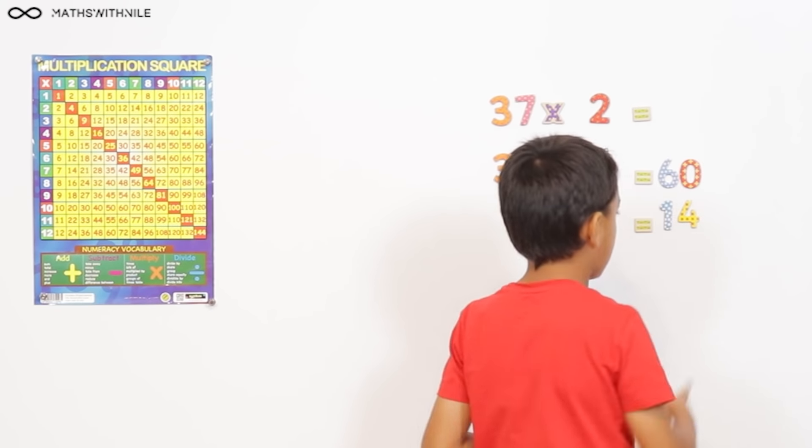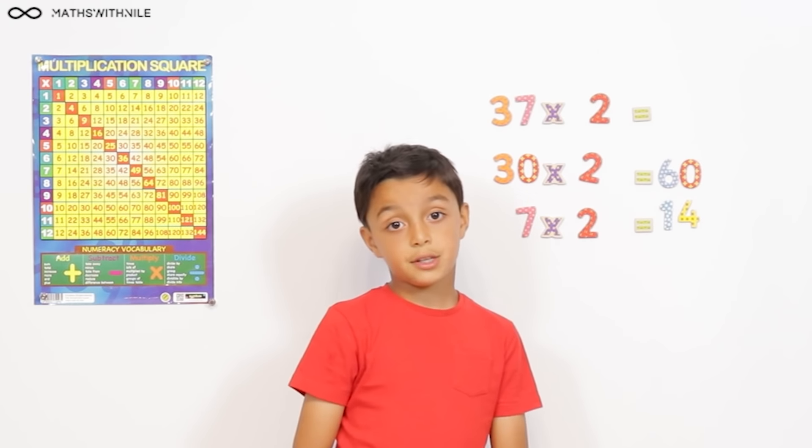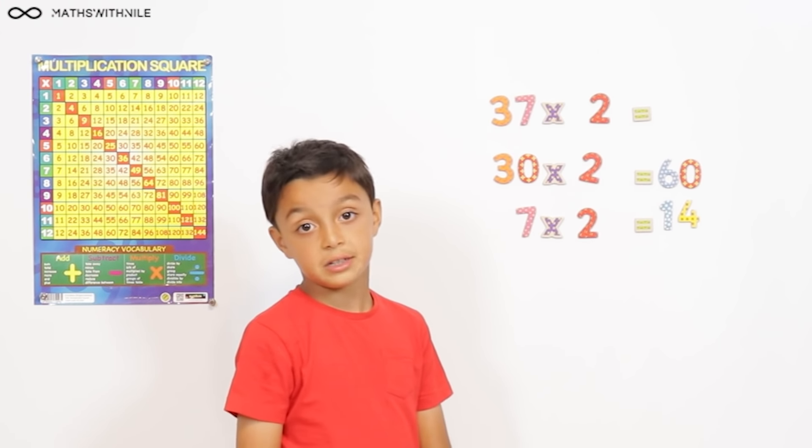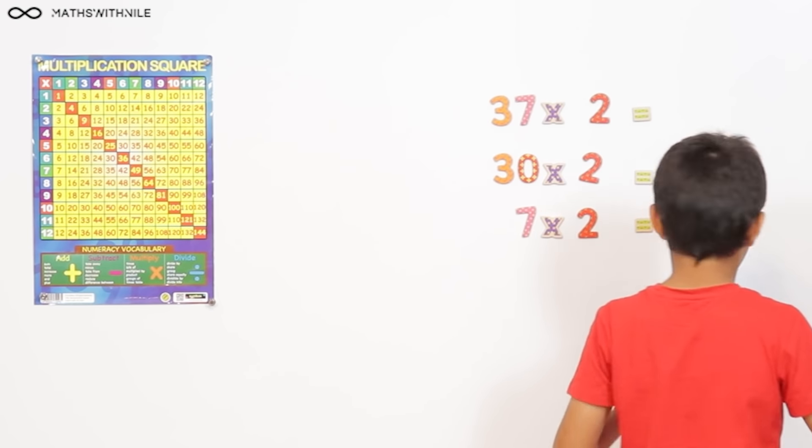And then 7 times 2 is 14. So, I'll put 14. So, 60 add 14. Well, 60 add 10 is 70. And 70 add 4 equals 74. Brilliant, Niall. So, the answer is 74. Good job.